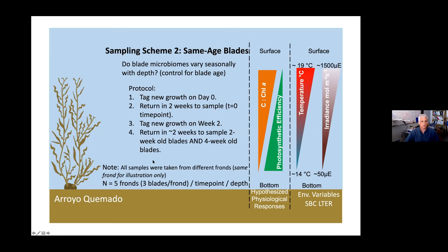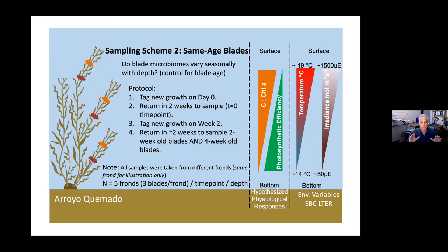The approach was to go out, tag a bunch of blades as a marker for new growth, return two weeks later and take a sample from different depths in the water column or along the frond, then re-tag it, and come back another two weeks later to re-sample the tips. This allowed them to track changes in microbial assemblages on blades of the same age, and also track how the cohort was changing over time within a given blade.